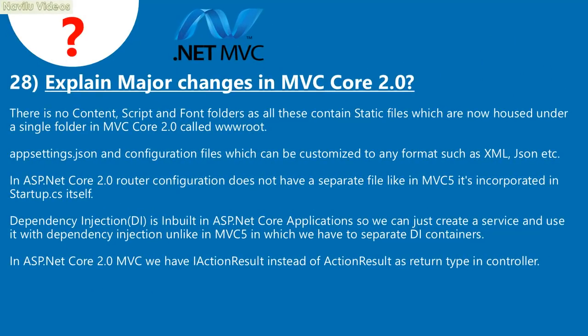Question 28: Explain major changes in MVC Core 2.0. There are no separate content, script, and font folders; static files are now housed under a single folder called wwwroot. Configuration uses appsettings.json and can be customized to formats such as XML or JSON. Router configuration no longer has a separate file — it is incorporated in startup.cs. Dependency injection (DI) is built into ASP.NET Core, unlike MVC5 which had separate DI containers. In ASP.NET Core 2.0 MVC, controllers use IActionResult instead of ActionResult as the return type.